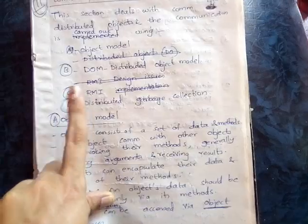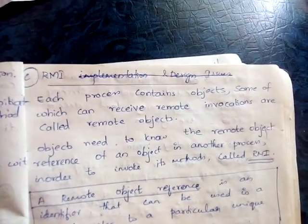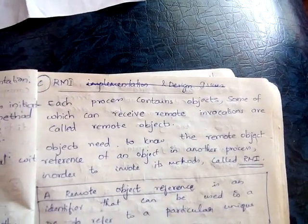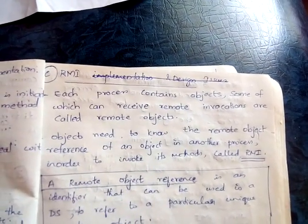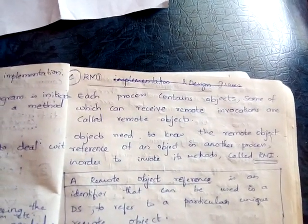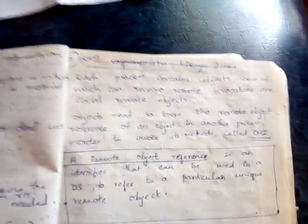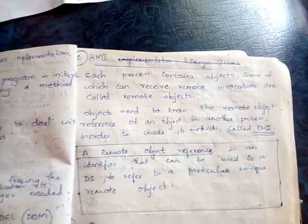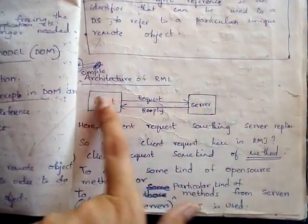The third communication mechanism is RMI — remote method invocation. Each process contains objects, some of which can receive remote invocations and are called remote objects. Objects need to know the remote object reference of an object in another process in order to invoke its methods. This is called remote method invocation, or simply remote invocation.